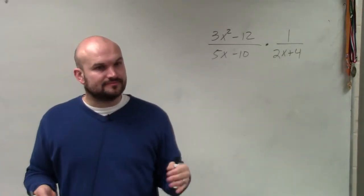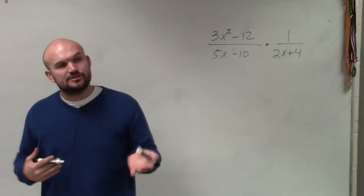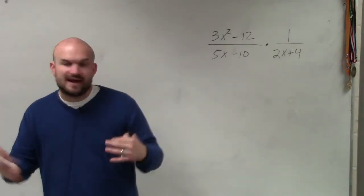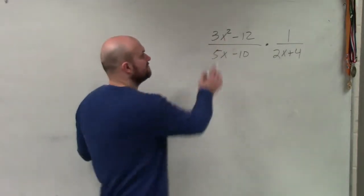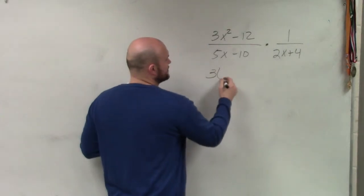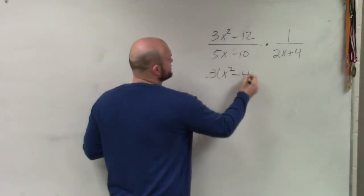So the technique that we use, think about whenever you guys see addition or subtraction, you're going to want to look to factoring. So in this case, I can factor out a 3. So I factor out a 3, I'm left with x squared minus 4.